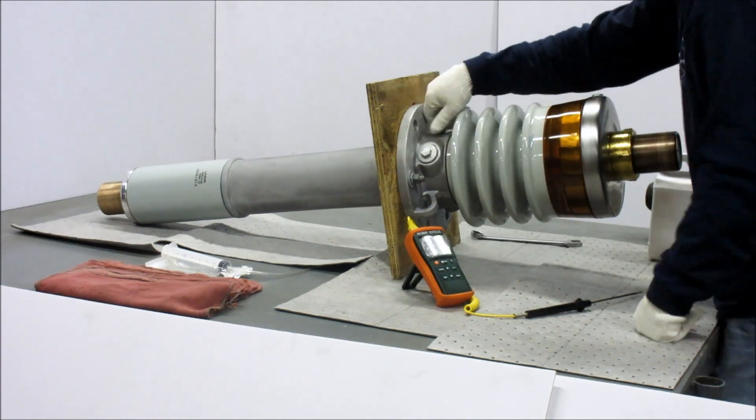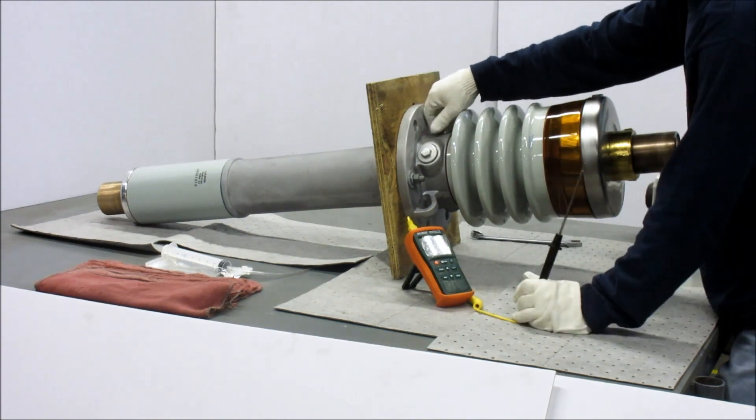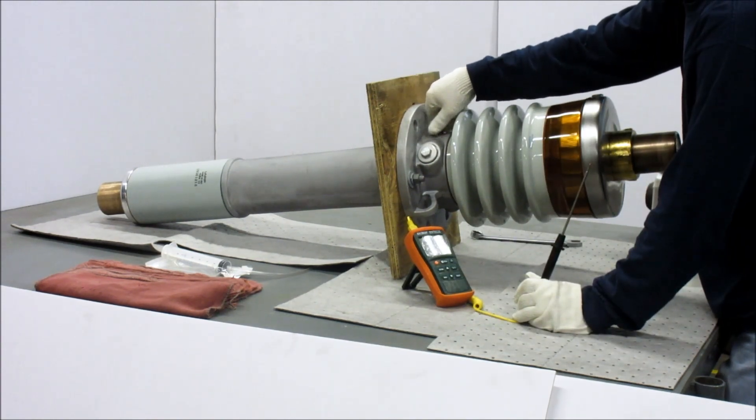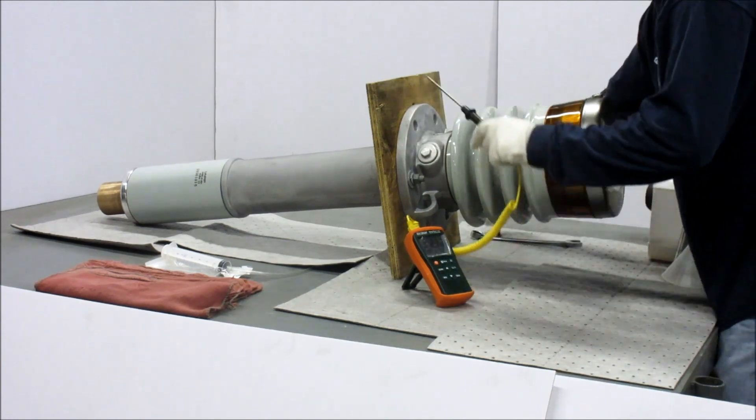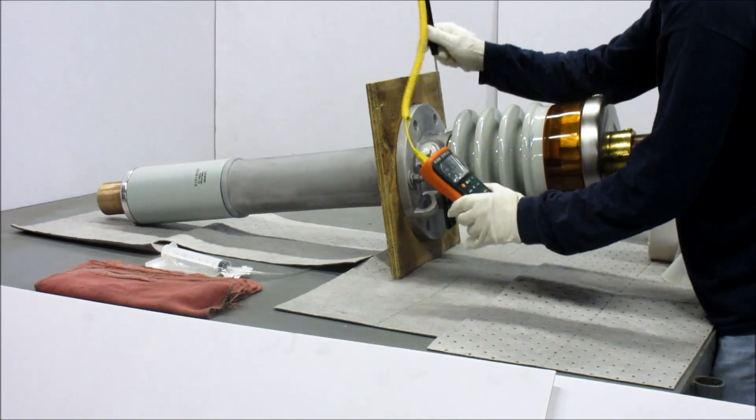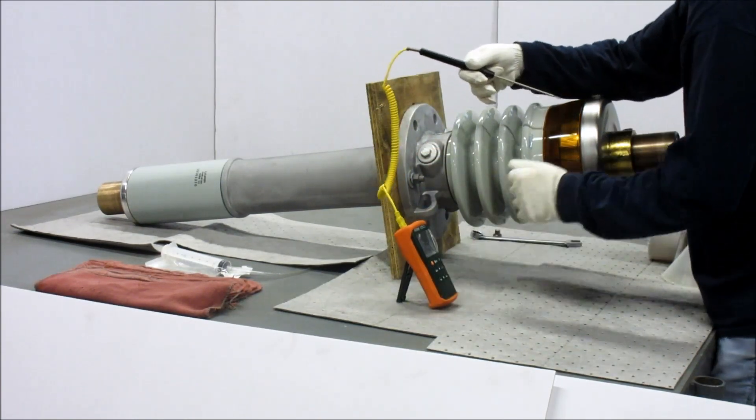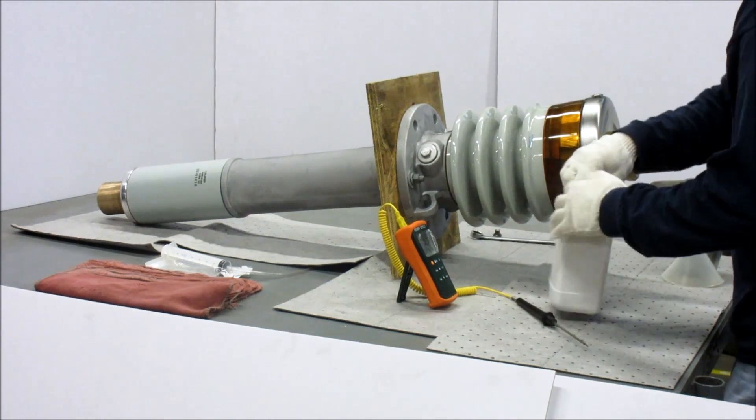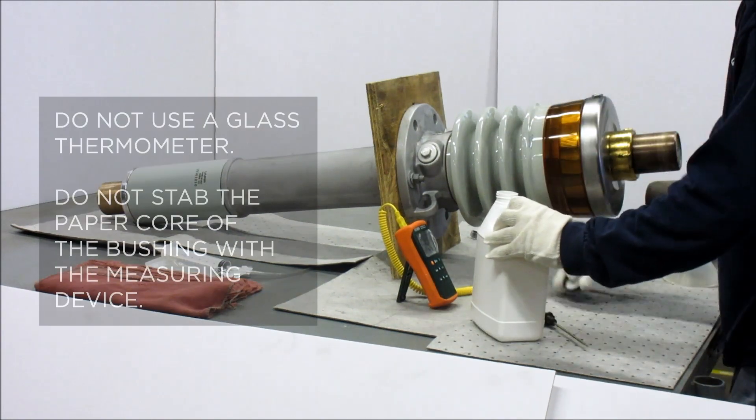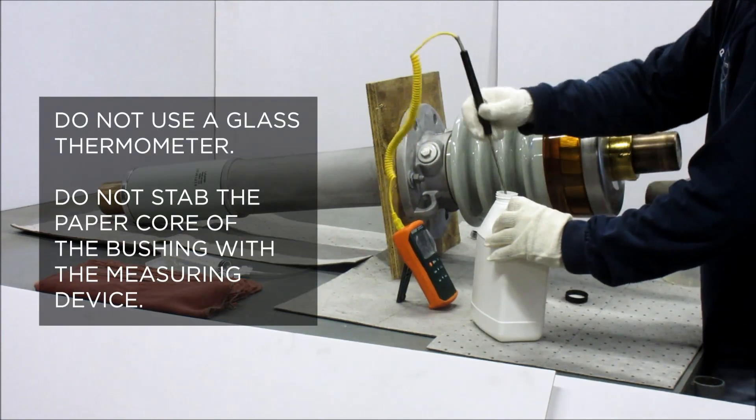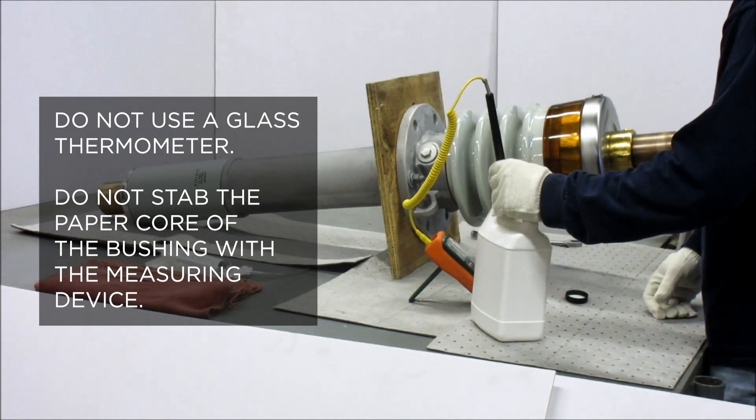Remove the oil fill plug from the flange and determine the temperature of the oil in the bushing and the oil that will be added. The best method is a dial thermometer or thermocouple inserted into the bushing oil. Ensure the oil to be added is the same temperature as the bushing's oil. Do not use a glass thermometer. Do not stab the paper core of the bushing with the measuring device.